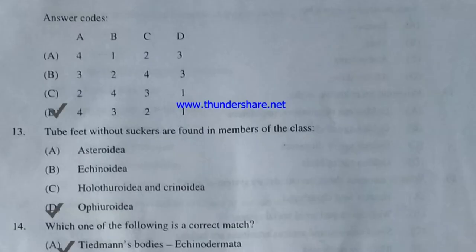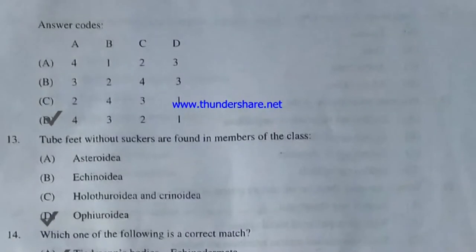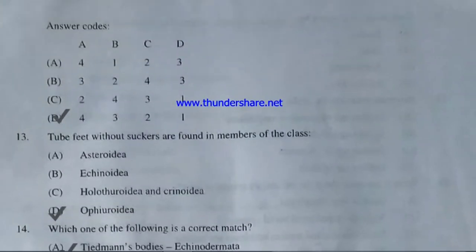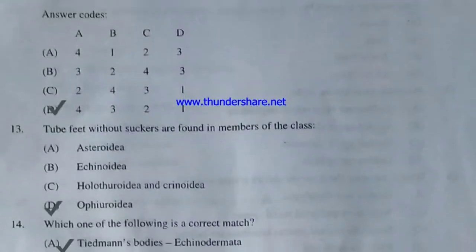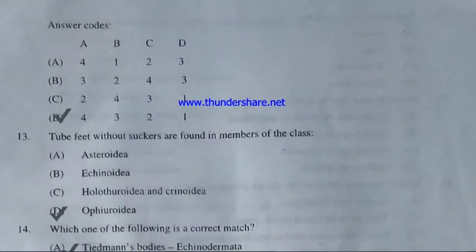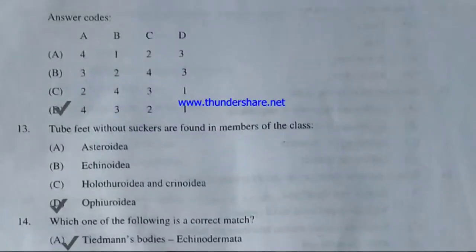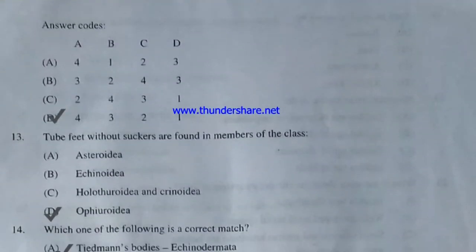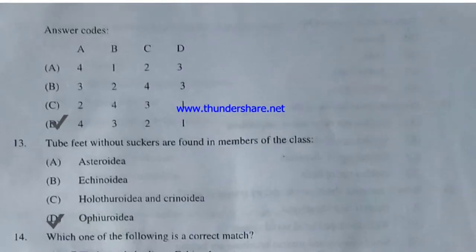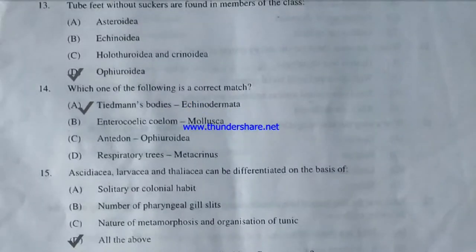Tube feet without suckers are found in members of which class — Asteroidea, Echinoidea, Holothuroidea, Crinoidea, or Ophiuroidea? The answer is D — Ophiuroidea. All five classes fall under phylum Echinodermata, but only Ophiuroidea has tube feet without suckers. Which of the following is a correct match — Tiedemann's body with Echinodermata, enterosalic xylem with Mollusca, Antidone with Ophiuroidea, or respiratory trees with Metacrinus? The answer is Tiedemann's body with Echinodermata.